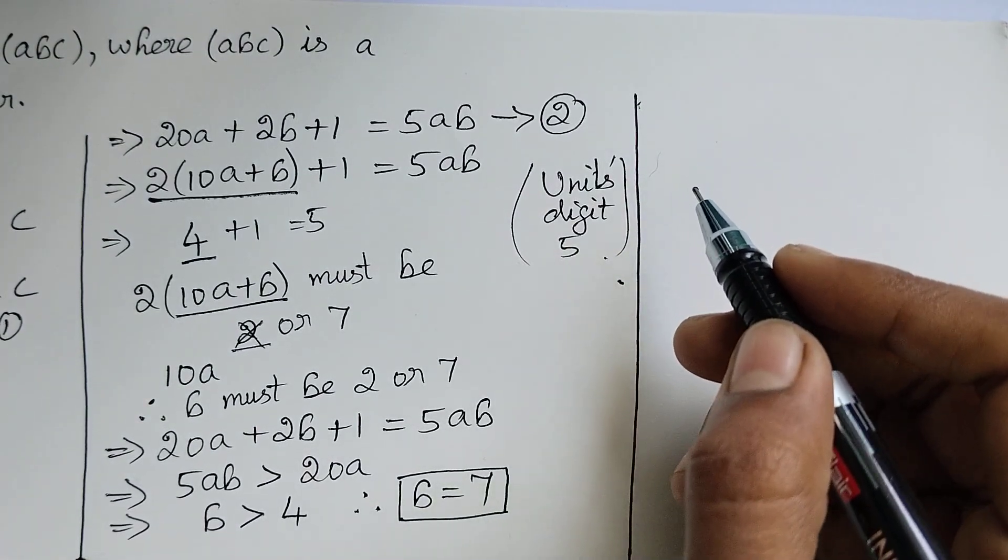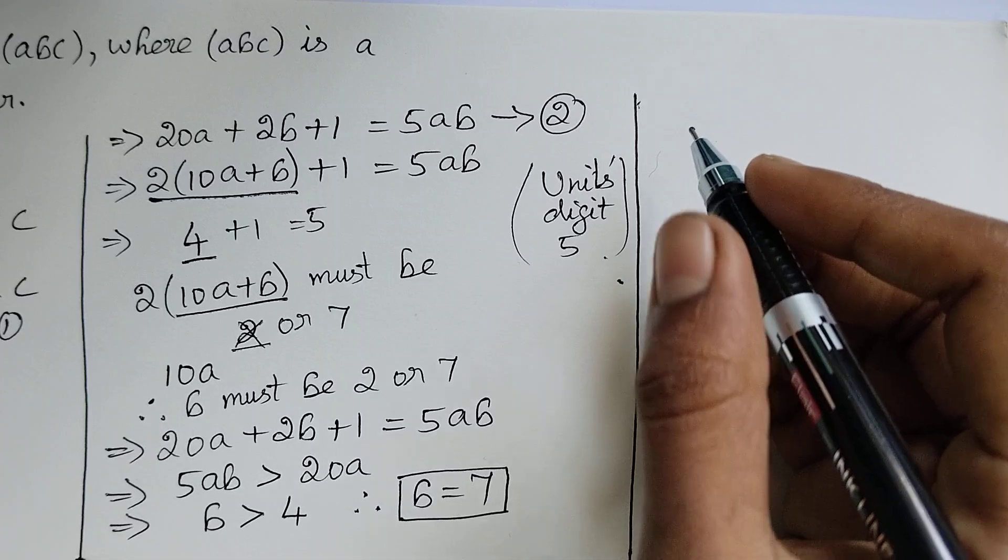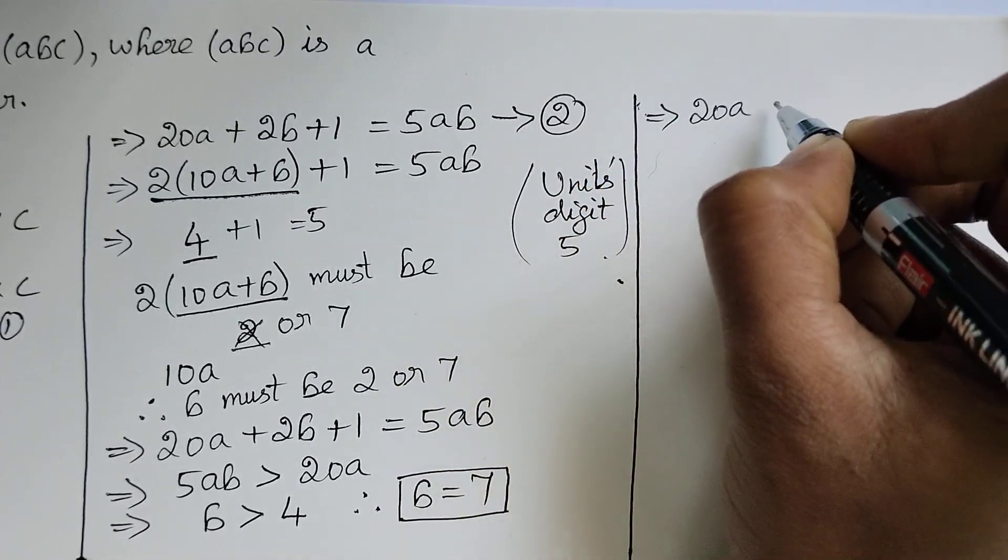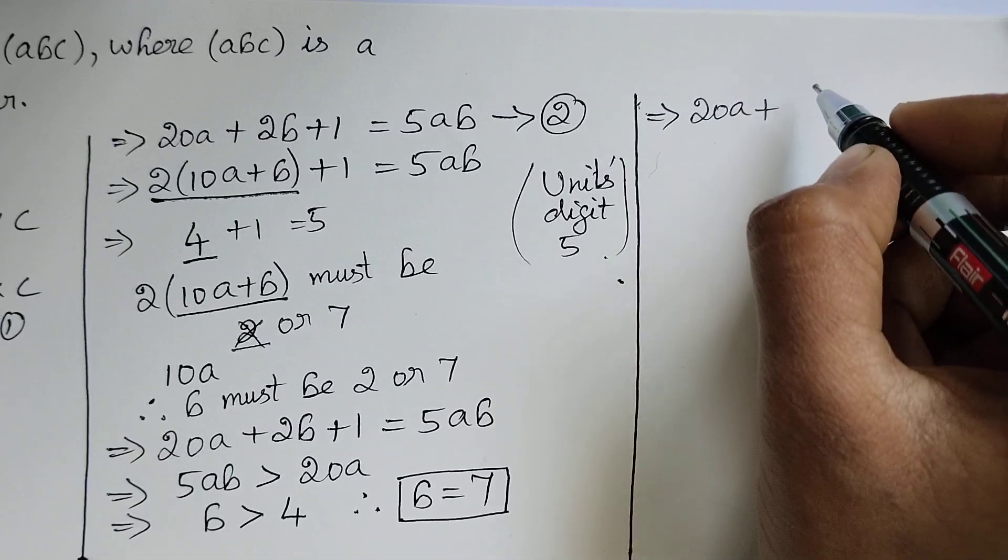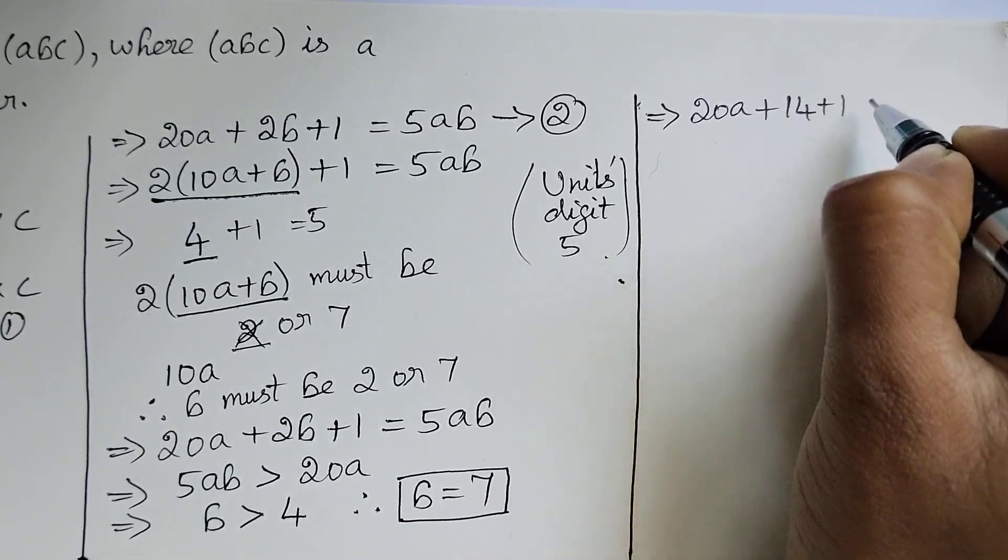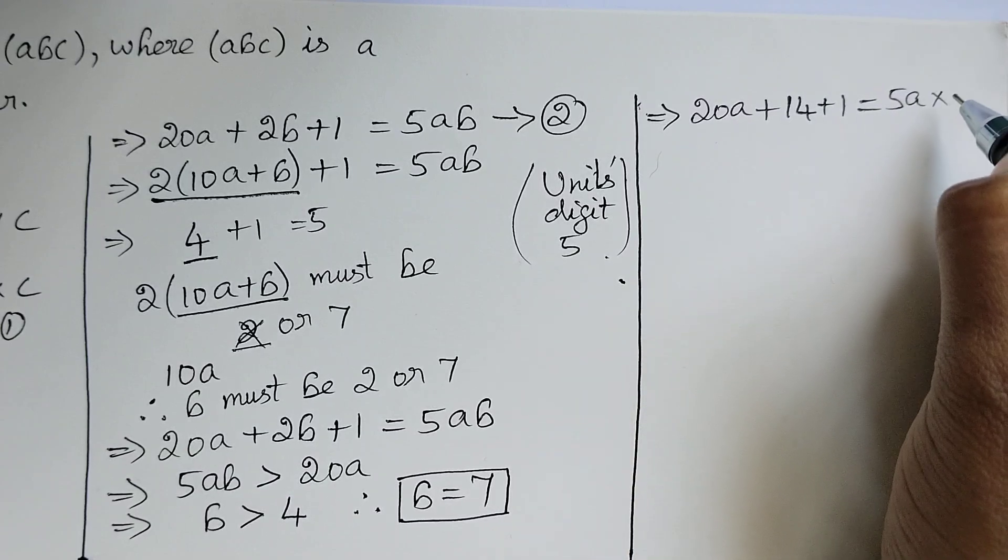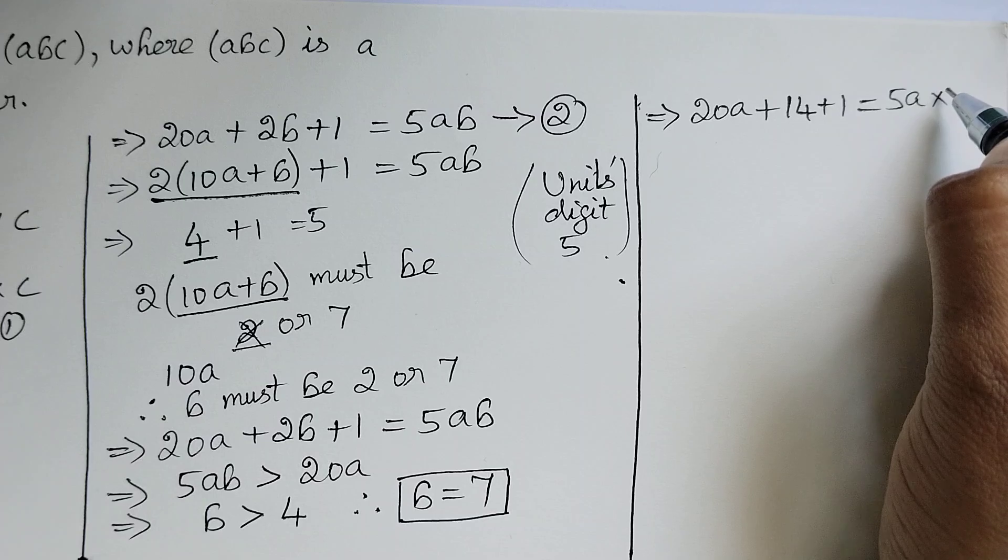Now substituting the values of c and b in equation number 2 we get 20a + 2(7) + 1 = 5a × 7, which gives 20a + 14 + 1 = 35a.